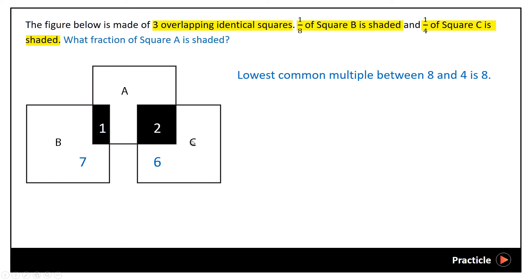So now square C is also made out of 8 parts. Now we can move on to find what fraction of square A is shaded. We know that square A consists of a total of 8 parts, and out of which, the number of shaded parts would be 1 plus 2. So the fraction of square A that is shaded would be 3 parts out of 8 parts.